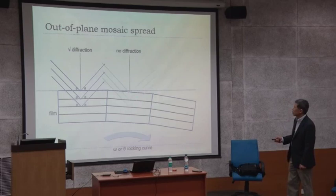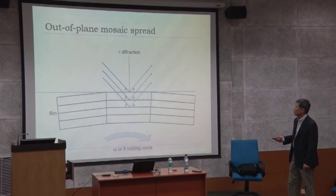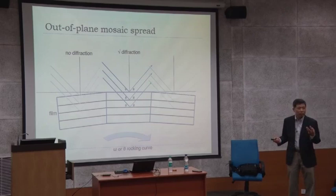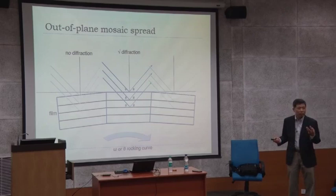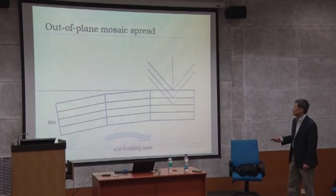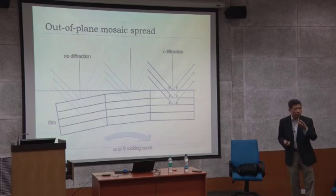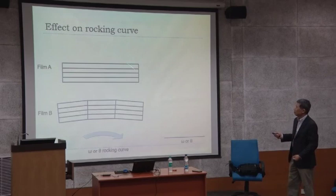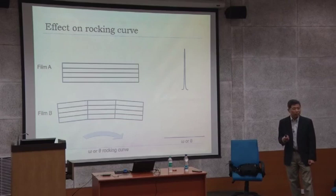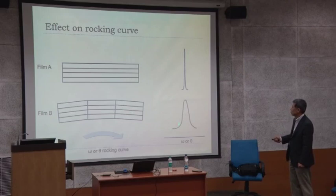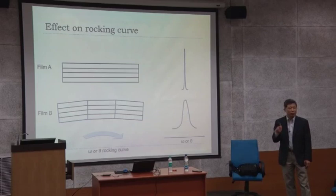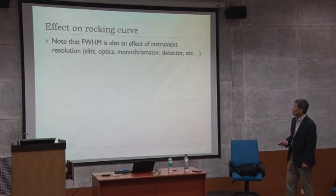In order to meet the Bragg condition of another grain, you rock the sample — then that grain has the Bragg condition while the others don't. So each region of the sample contributes to the Bragg condition at different omega angles. When you have a perfect single crystal with a small mosaic spread, you get a very sharp rocking curve scan. But with multiple domains, you get basically a broad peak. This is how people define crystalline quality using mosaic spread — measuring the full width at half maximum.